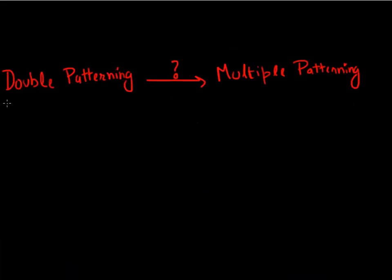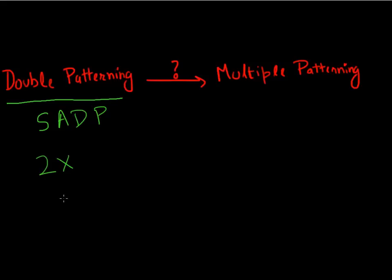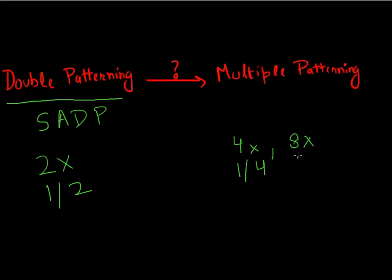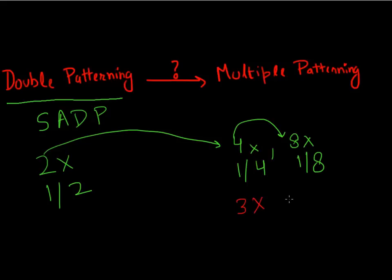So what we have discussed so far is how, using self-aligned double patterning with one exposure step, you could still obtain twice the number of lines, or reduce your pitch by half. The next obvious question is: can you extend this further? Can you use this to obtain a 4x doubling of density, or going forward an 8x increase, or decrease your pitch by one-fourth or one-eighth? Does it only happen in multiples of two? Can you do it three times — can you obtain a tripling of density or reduce your pitch by one-third? And the answer is yes.